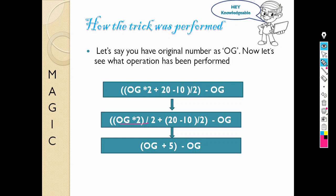If you see this, OG times 2 divided by 2 will give you OG, and this 20 minus 10 by 2 will give you 5. And then I told you to subtract OG, so that is the original number.